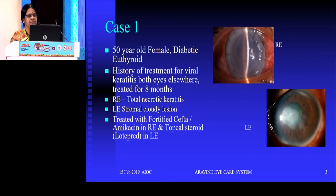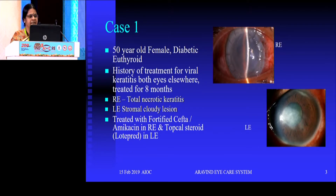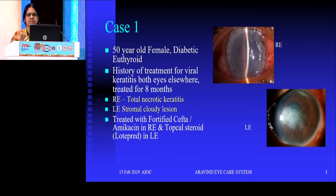Let us see a few case examples. This is a 50-year-old female, diabetic with hypothyroid and poor glycemic control. She came with a referral from her center, where she was on treatment for bilateral viral keratitis for almost eight months. Then suddenly she started developing complete corneal necrosis — the cornea became necrotic. They referred her to us immediately and had done some basic microbiological workup. They suspected bacterial infection, but it was not responding to any treatment.